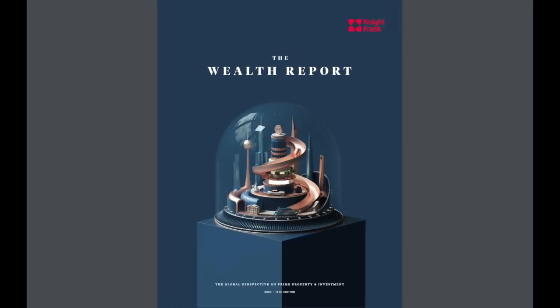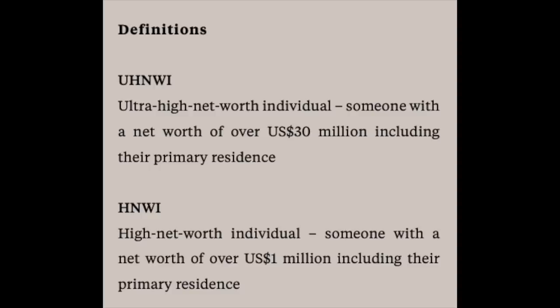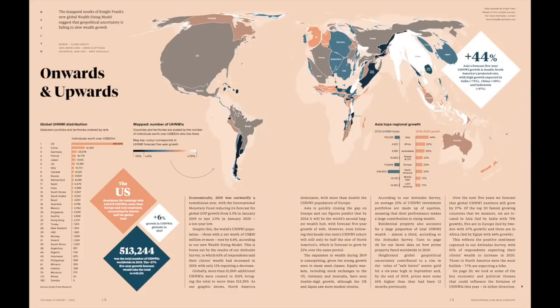According to them, globally speaking, an ultra high net worth individual is someone with a net worth of over $30 million fiat fed notes, and that includes their primary residence. A high net worth individual is someone with a net worth of over $1 million including their prime residence. You can see that while North America — specifically the USA — leads the world by end of 2019 with over 240,000 individuals with net worth over $30 million, Asia, specifically China, is hot on their tails.